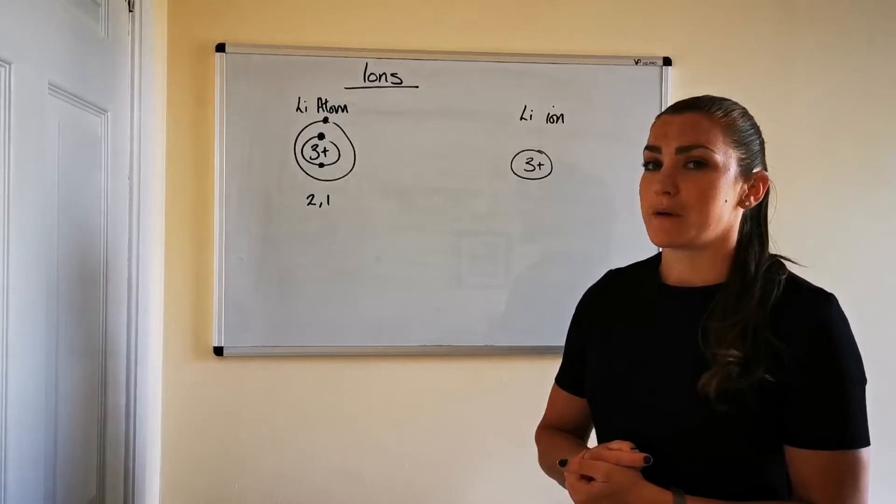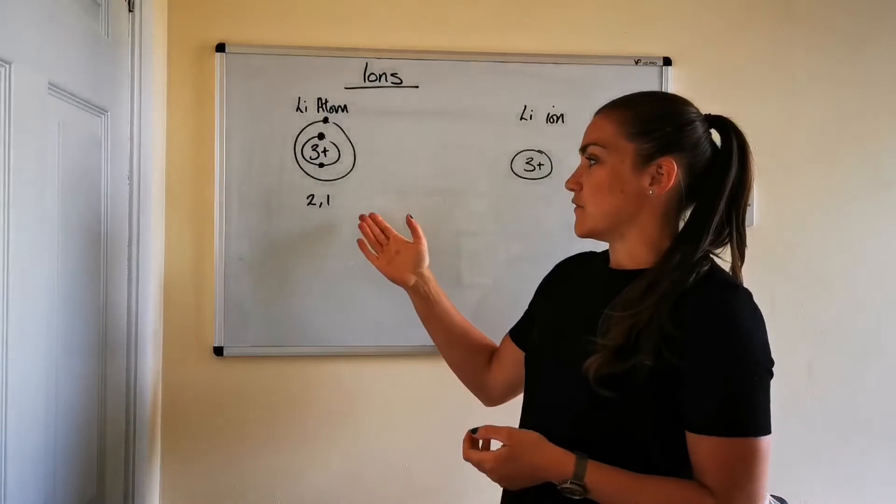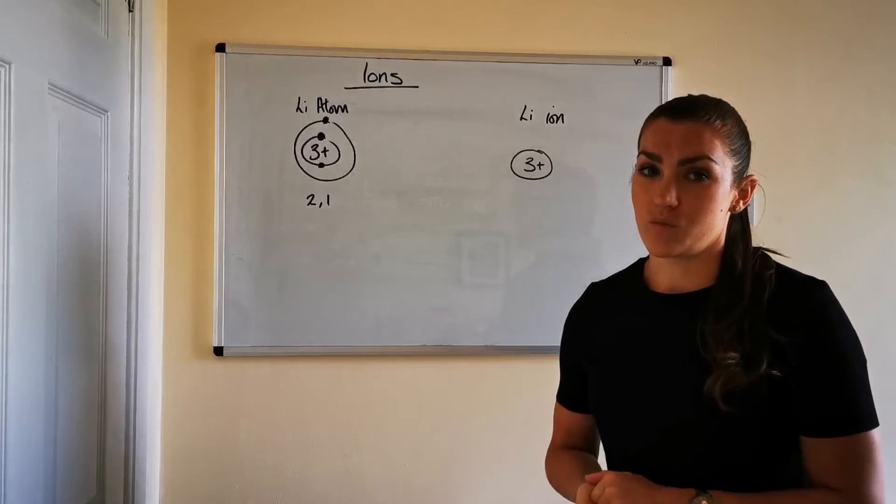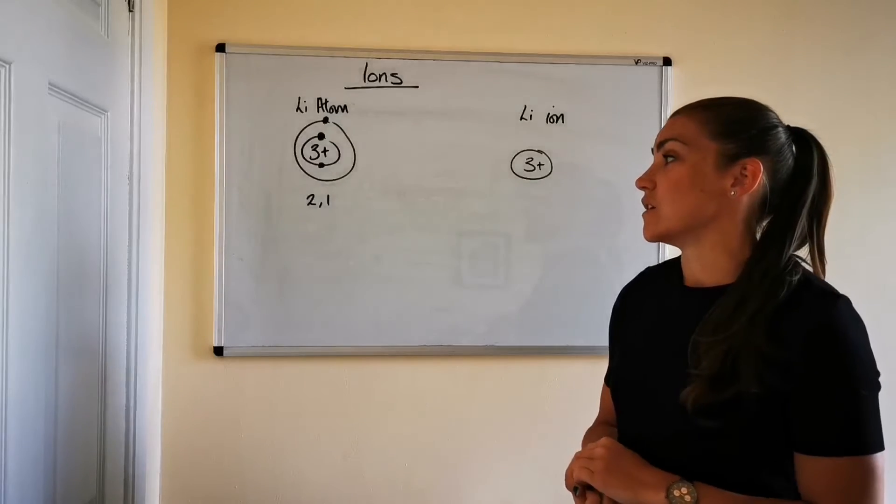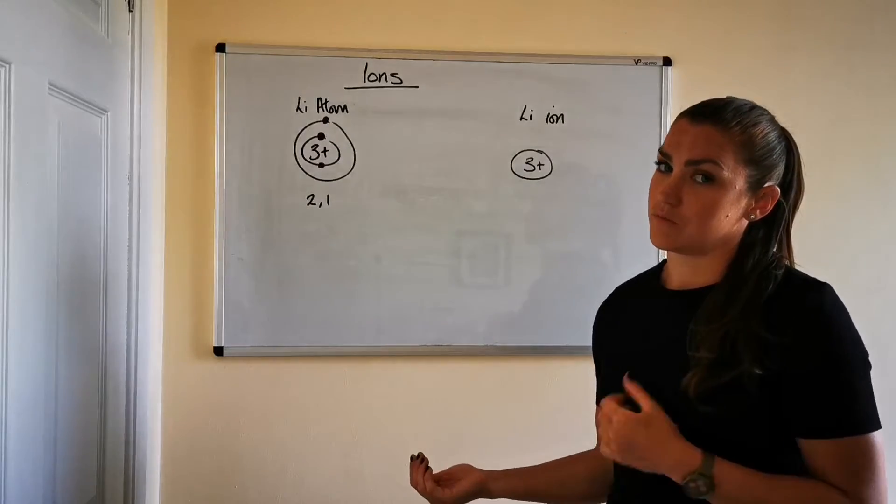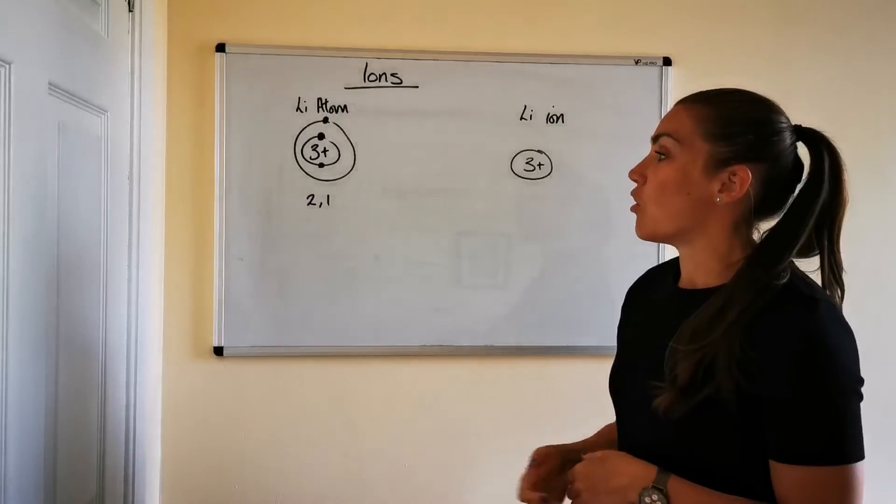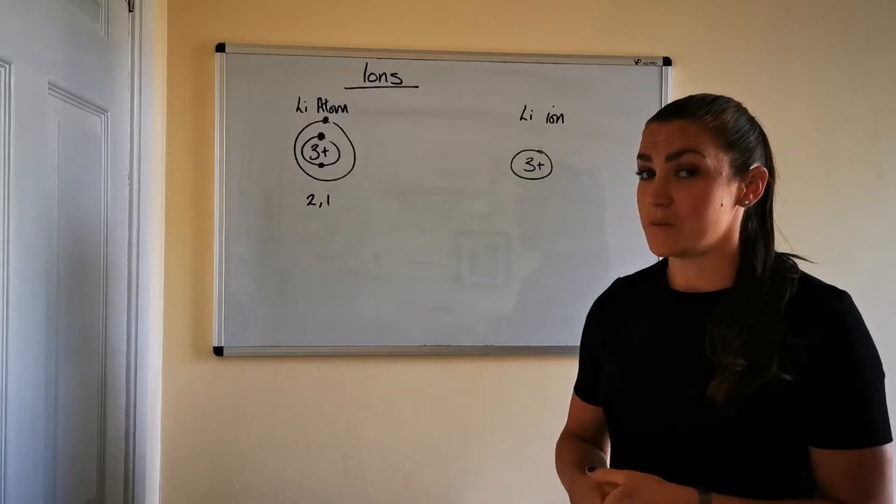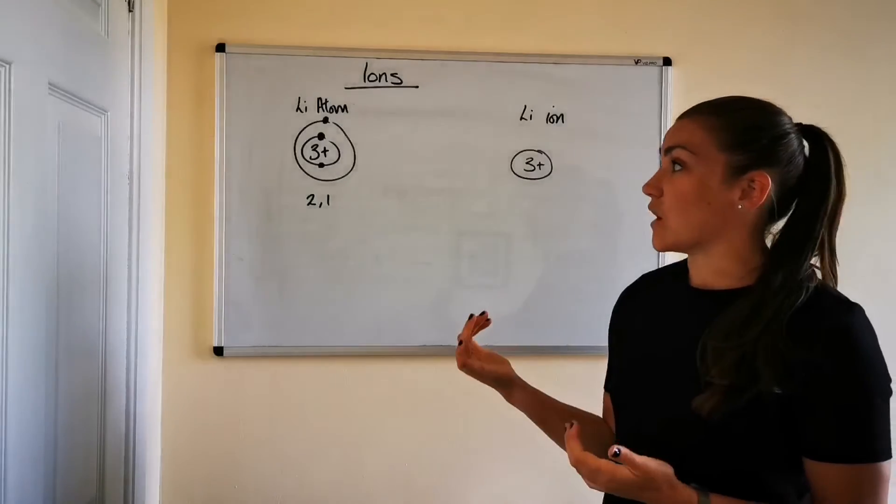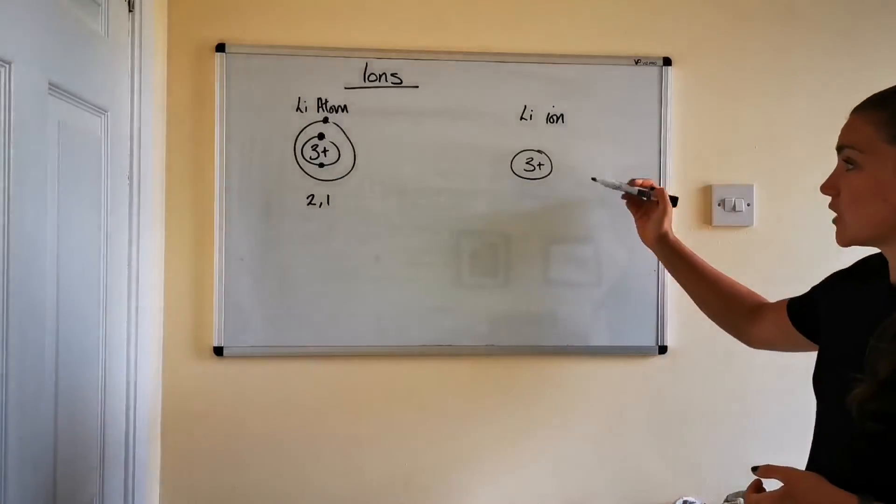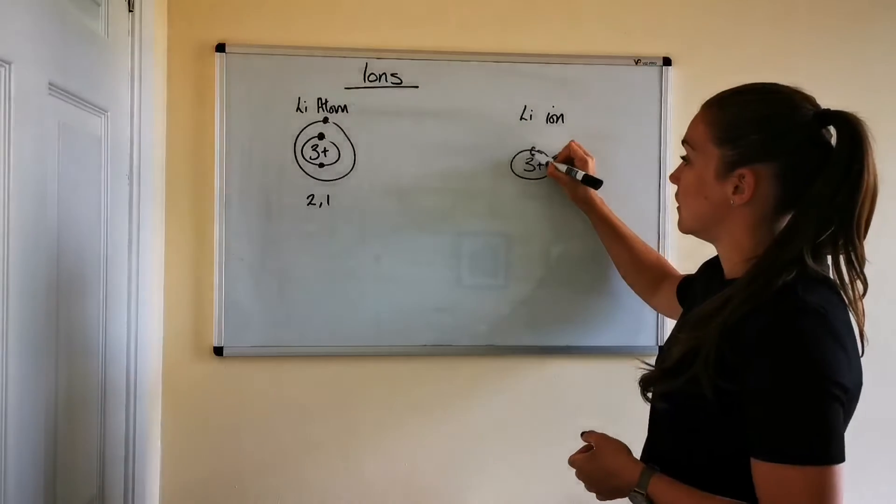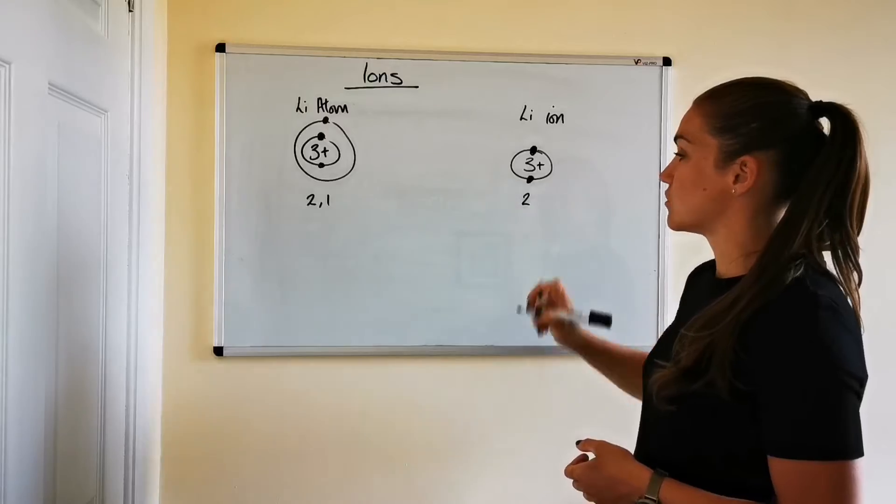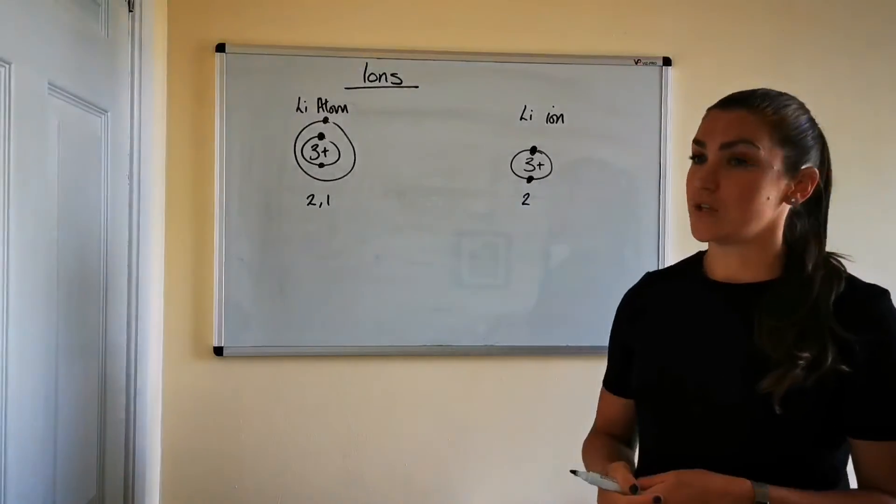Now for lithium to become stable it needs to fill its outer shell which is the second level. So we know that the second level will take eight electrons. So it can either gain seven electrons which is quite a lot of electrons or it can lose one. So because losing one electron involves less electrons being transferred that's what happens. It loses an electron. So if you go over here the lithium ion then loses its outer electron so it ends up with just two. So its electron arrangement is just two like helium.